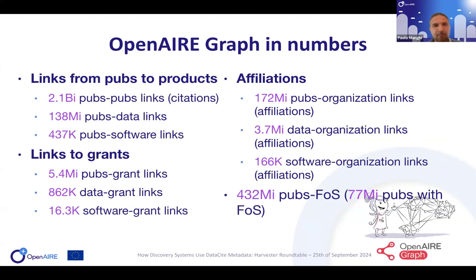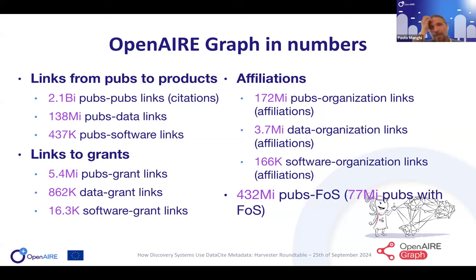We collect many relationships from different sources. Publication-to-publication is the usual collection, but also publication-data links, now at 138 million, plus publication-software links and so on. We exploit this for discovery reasons so you can move from one object to another, but also for monitoring — especially in open science, measuring open science trends and metrics. Finding the links between these objects is a challenge but also very effective in terms of what we can produce and generate as open data.